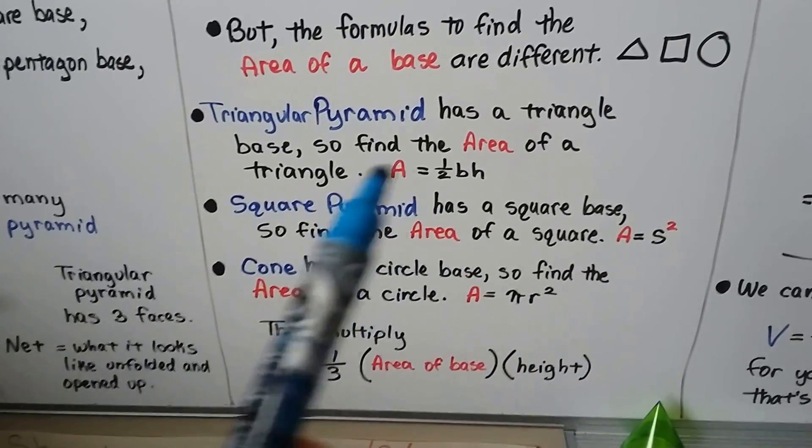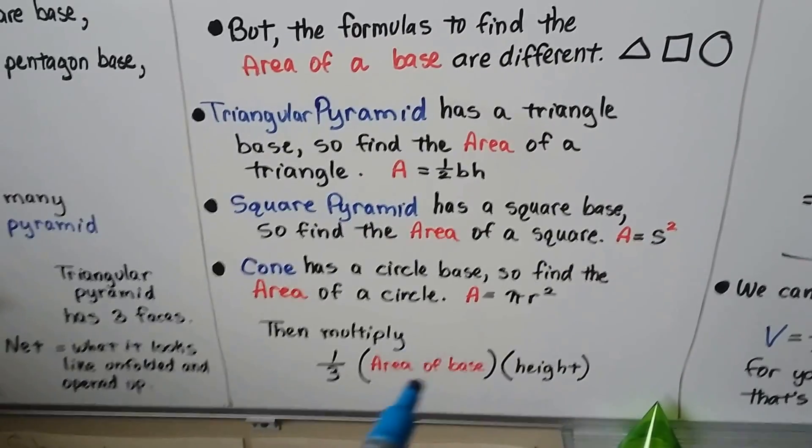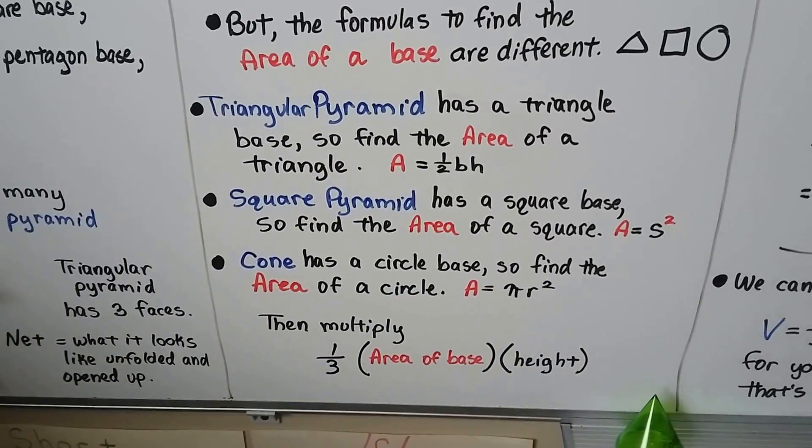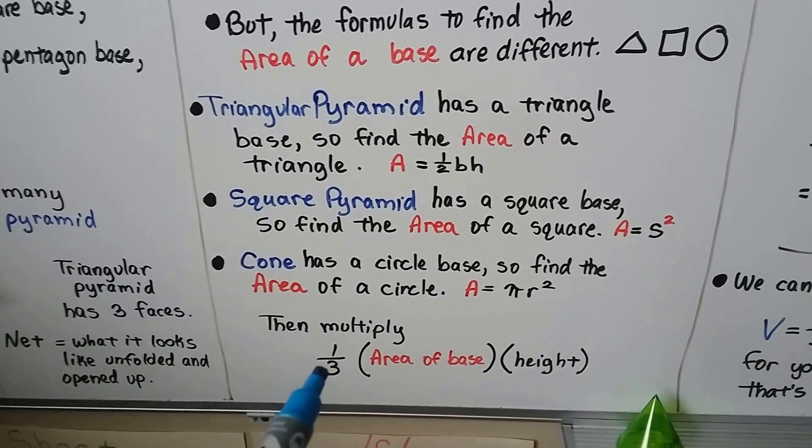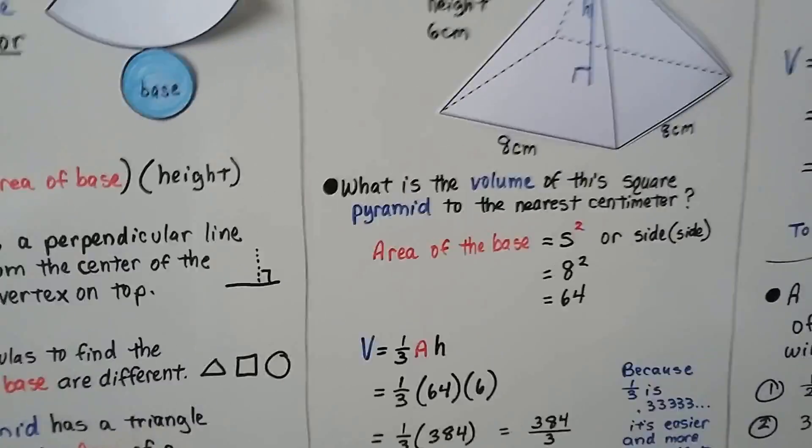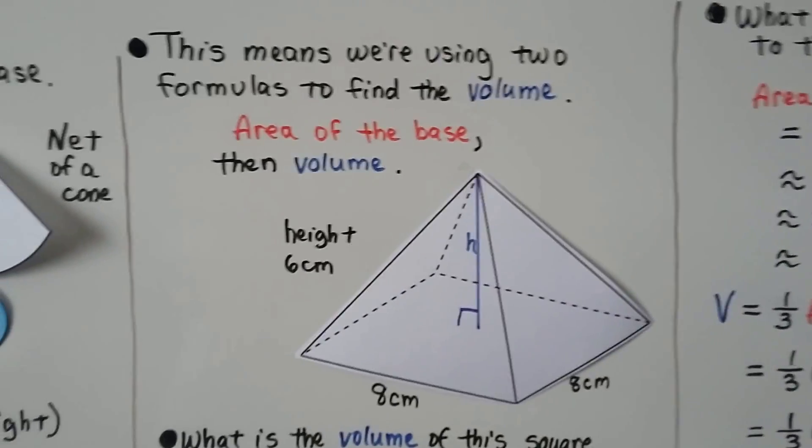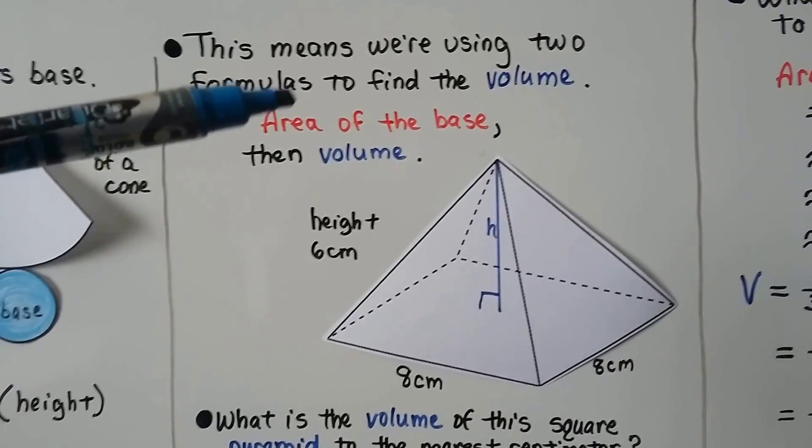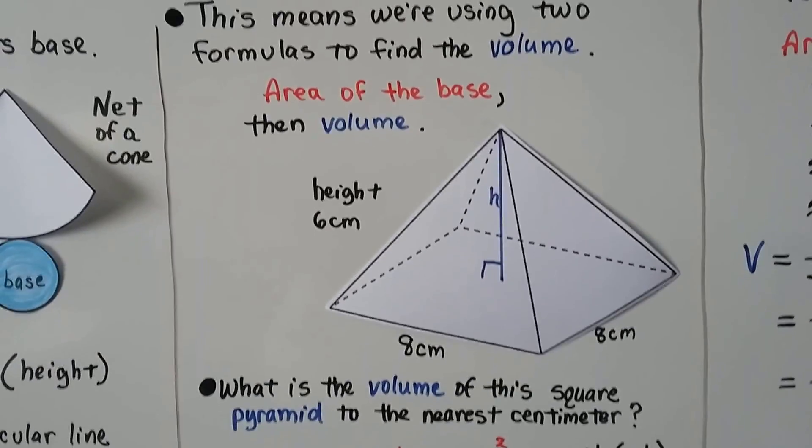Once we find the area of the base, which we substitute in here, then we multiply it by its height, and we find a third of that. Instead of multiplying it by a third, we're going to divide by three, and I'll show you that in a second. This means we're using two formulas to find the volume. We're using the area of the base formula, and then we're using the volume formula.